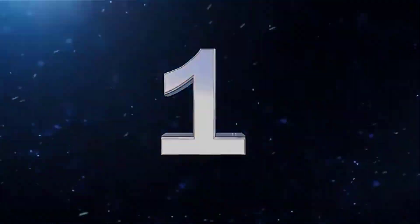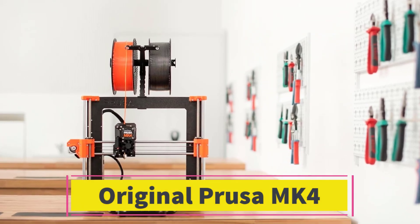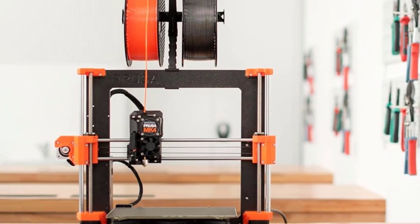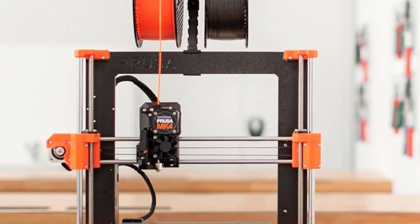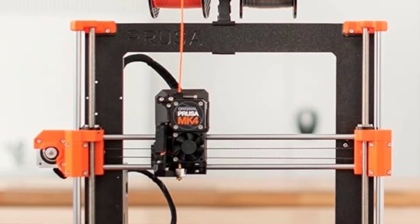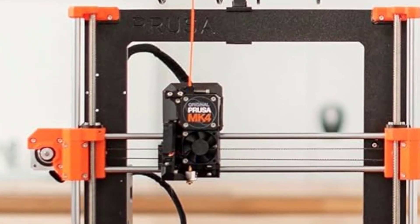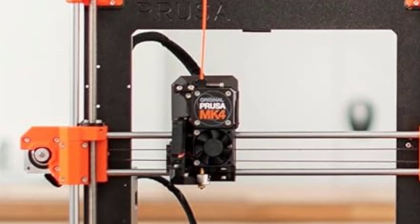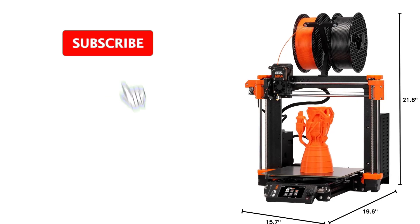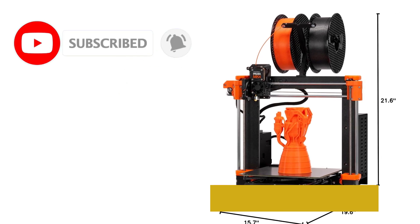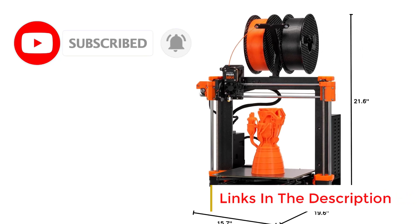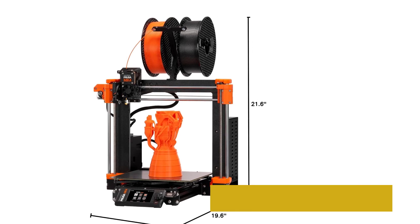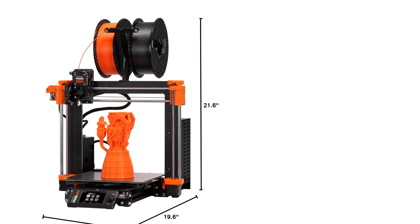Number 1. Original Prusa MK4. The original Prusa MK4 3D Printer Kit is a high-quality DIY 3D printer designed for both beginners and experienced users who enjoy assembling their own machines. Known for its precision, reliability, and ease of use, this printer comes with a removable print sheet and automatic calibration, making setup and operation more efficient. The DIY kit format provides an educational experience, allowing users to learn about the inner workings of a 3D printer while assembling it.